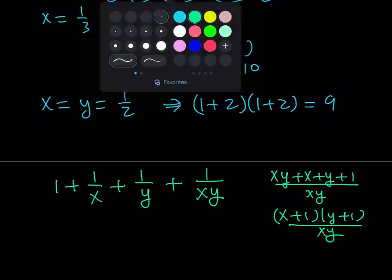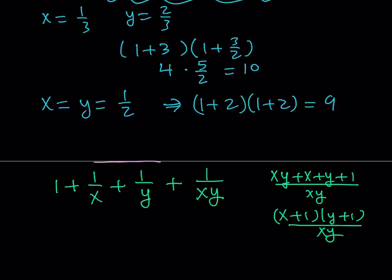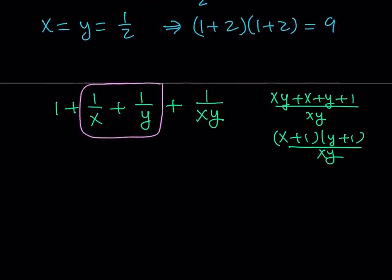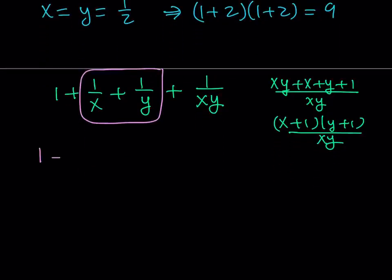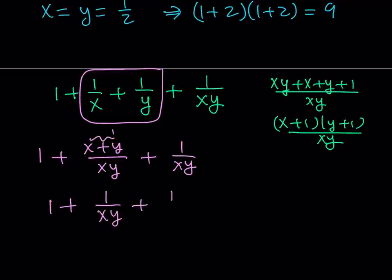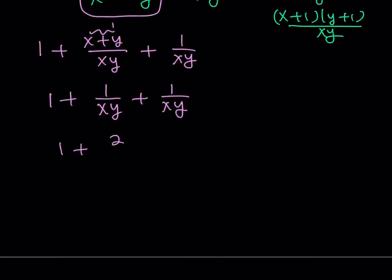For example, if I take these two expressions and put them together, I'll be getting something nice. Because this gives you 1 plus x plus y over xy plus 1 over xy. So it's better not to make a common denominator for the whole thing. Well, we do know that x plus y is equal to 1. So we can just go ahead and replace x plus y with 1, and that gives me 1 plus 1 over xy plus 1 over xy. And as you know, this is equal to 1 plus 2 over xy.